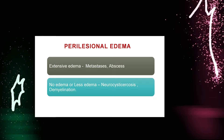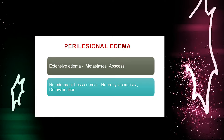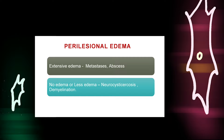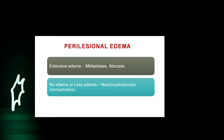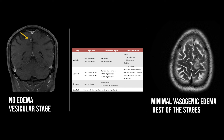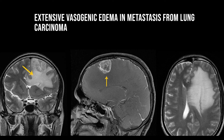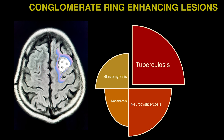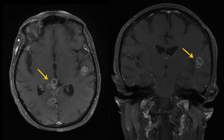The next most important thing is looking at perilesional edema. Extensive edema is seen in cases of metastasis or abscess. No edema or minimal vasogenic edema is seen in NCC. Extensive vasogenic edema is seen in metastasis from carcinoma lung. Another important clue is conglomeration, which is seen in cases of tuberculosis.